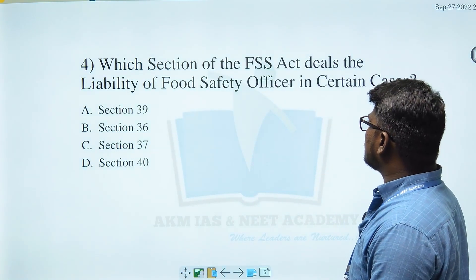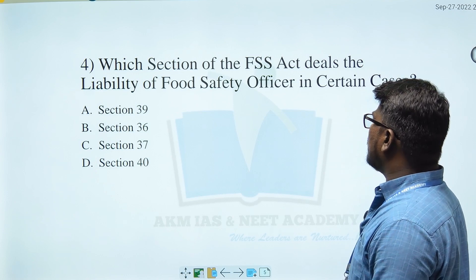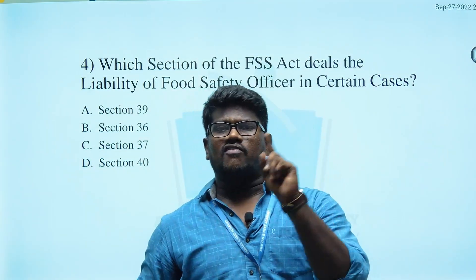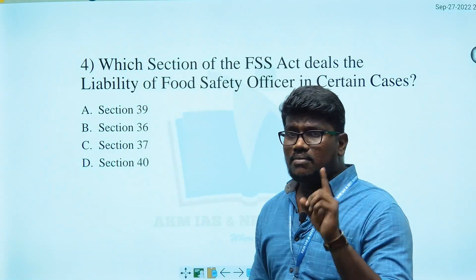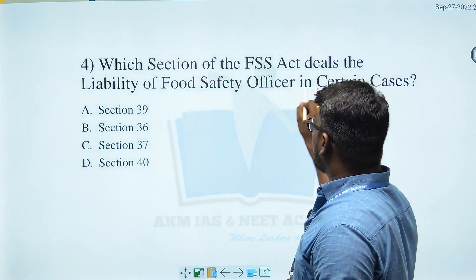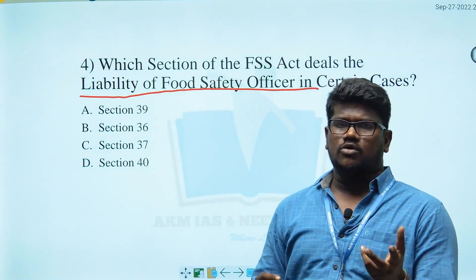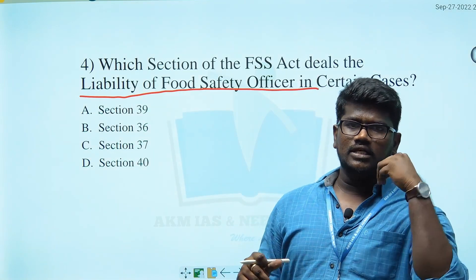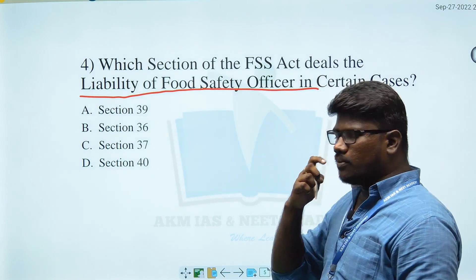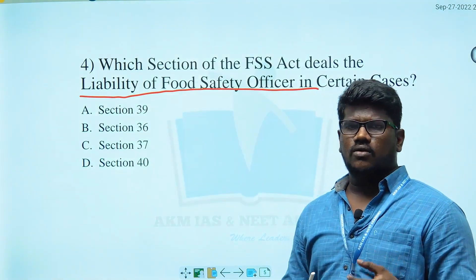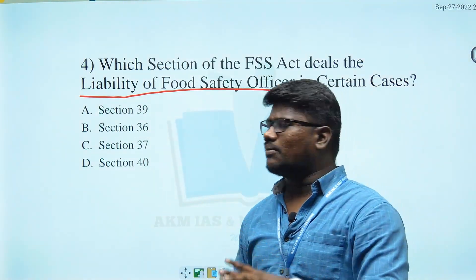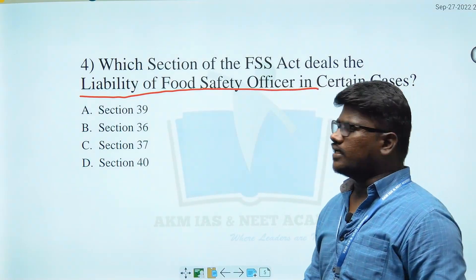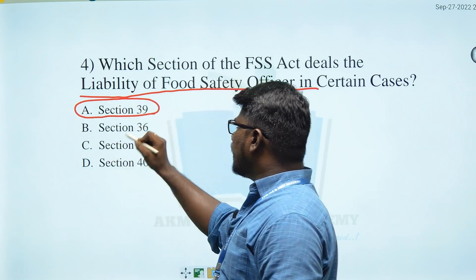Next question: Which section of the FSS Act deals with the liability of the Food Safety Officer in certain cases? Options: A) Section 39, B) Section 36, C) Section 37, D) Section 40. Section 39 is the right answer.